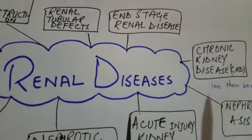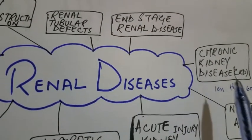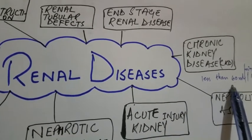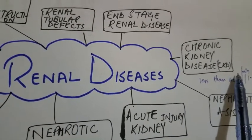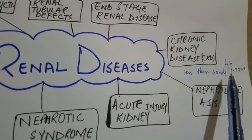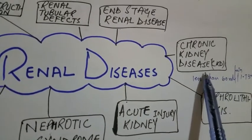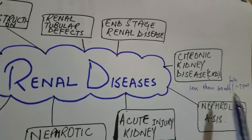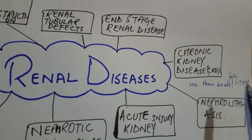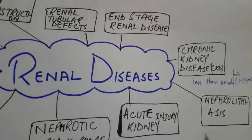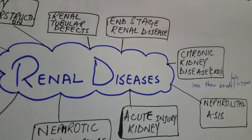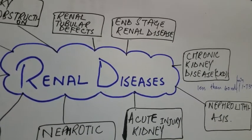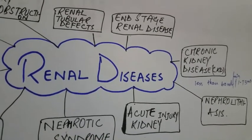Chronic kidney disease is defined as a diminished GFR of less than 60 mL per minute per 1.73 meter squared, persisting for at least three months from any cause, along with persistent albuminuria.